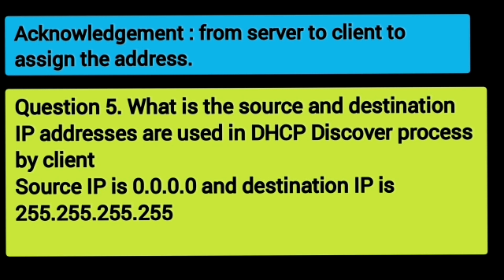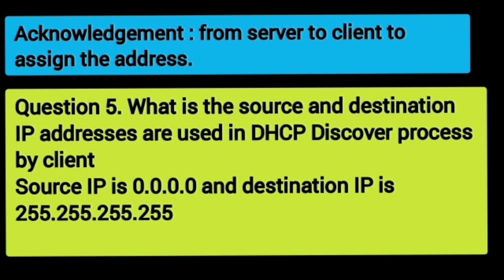Question 5: What source and destination IP addresses are used in the DHCP Discover process by the client? The source IP is 0.0.0.0 and the destination IP is 255.255.255.255.